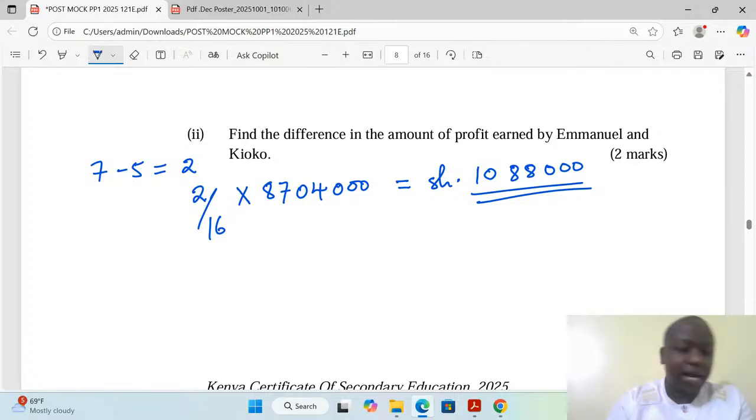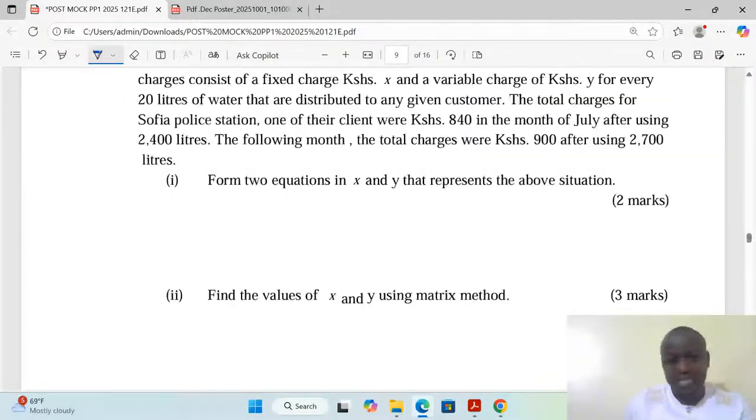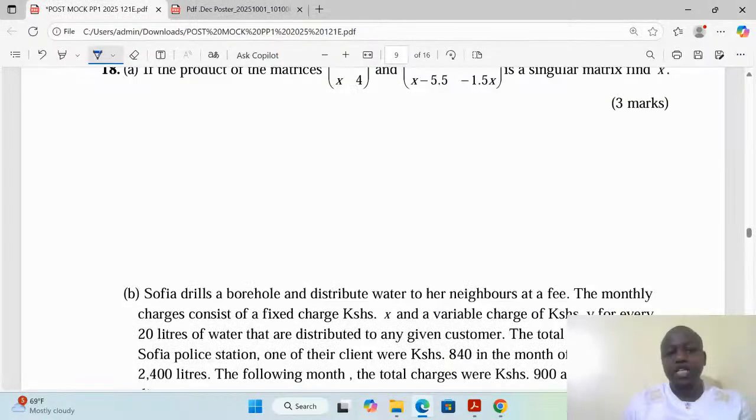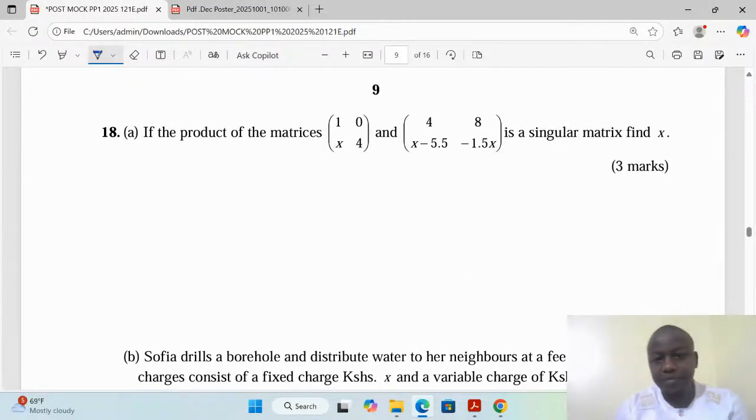Question 18 on matrices, form three work. If the product of the matrices [1,0; x,4] and [4,8; x-5.5,-1.5x] is a singular matrix, find x. What is a singular matrix? A singular matrix is a matrix without inverse, or rather it's a matrix whose determinant is zero.